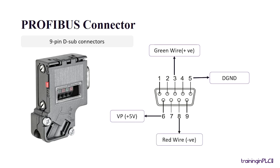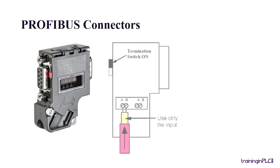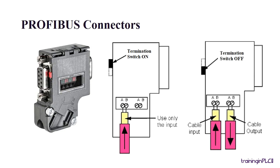On top of the PROFIBUS connector, you can find the switch which is used to terminate the node. If the termination switch is on, then the PROFIBUS connector will be terminated and you can't connect to the next node. If the termination switch is off, then the PROFIBUS will enable the connection to the next node.